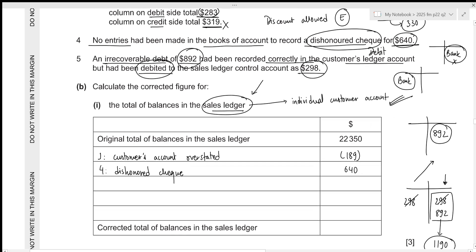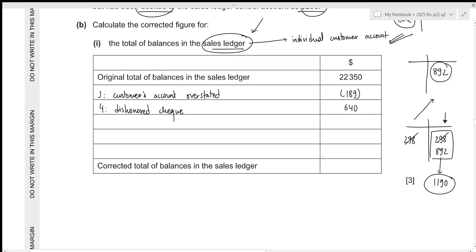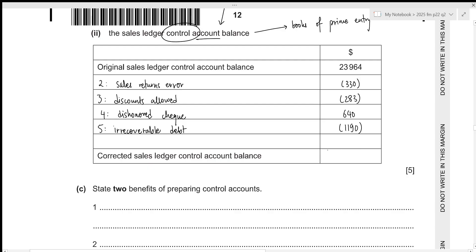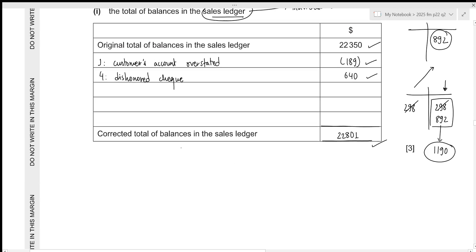Now we calculate the corrected values. For the sales ledger: 22,350 − 189 + 640 = 22,801. For the control account: 23,964 − 330 − 283 + 640 − 1,190 = 22,801. Both the corrected sales ledger control account balance and the corrected total of balances in the sales ledger are the same — 22,801 — confirming that all errors have been corrected in the right places.